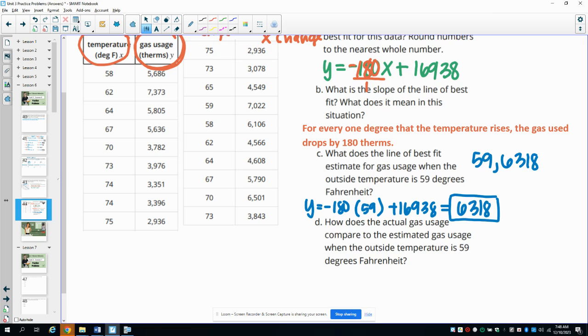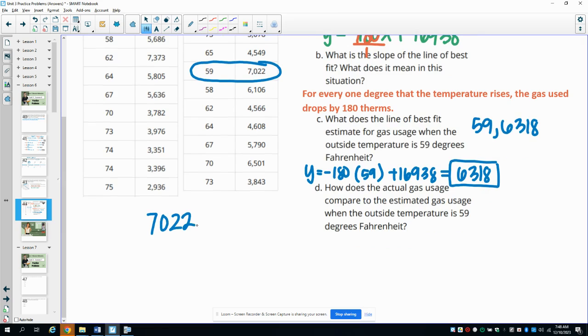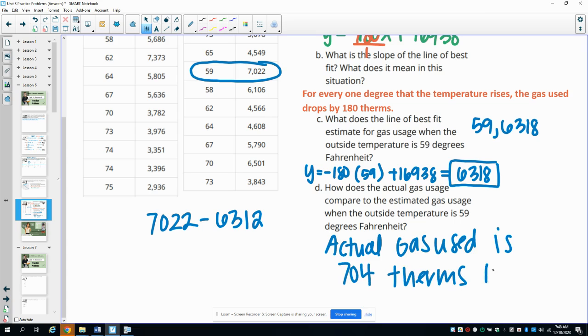Then it wants us to say, how does that compare to the actual data? So then you go find 59 in your table. We see here that the actual data at 59 is 7,022. So how does the actual usage compare to the estimated? The actual is 7,022 versus the estimated is 6,318. So if we subtract those, we find out that the actual gas used is 704 therms higher than the estimate.